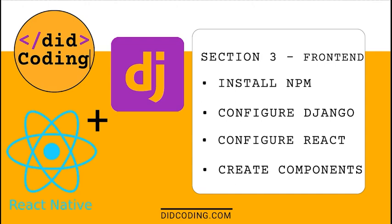Welcome to the third part of this Django React tutorial. In the last section we finished our Django backend — there is one setting I forgot to go through, but I'll show that in a second. In this section we'll be installing npm, creating a new React app, and configuring everything on the front end. By the end, we should have a working single page application for creating, reading, updating, and deleting YouTube schedule tasks — a carbon copy of section one, but using Django plus React.